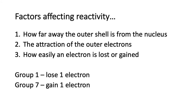This is probably the most important slide today. There are three factors that affect the reactivity of either group 7 or group 1. The first is how far away the electron shell is from the nucleus. The second is the attraction of the outer electrons to the nucleus — the further away, the less attraction; the closer, the more attraction. The third is how easily that electron is going to be lost or gained: if it's further away, it's easier to lose; if it's closer, it's easier to gain an electron. Group 1 wants to lose one electron to become stable, whereas group 7 gains one electron to become stable. Please pause the video and write that down.